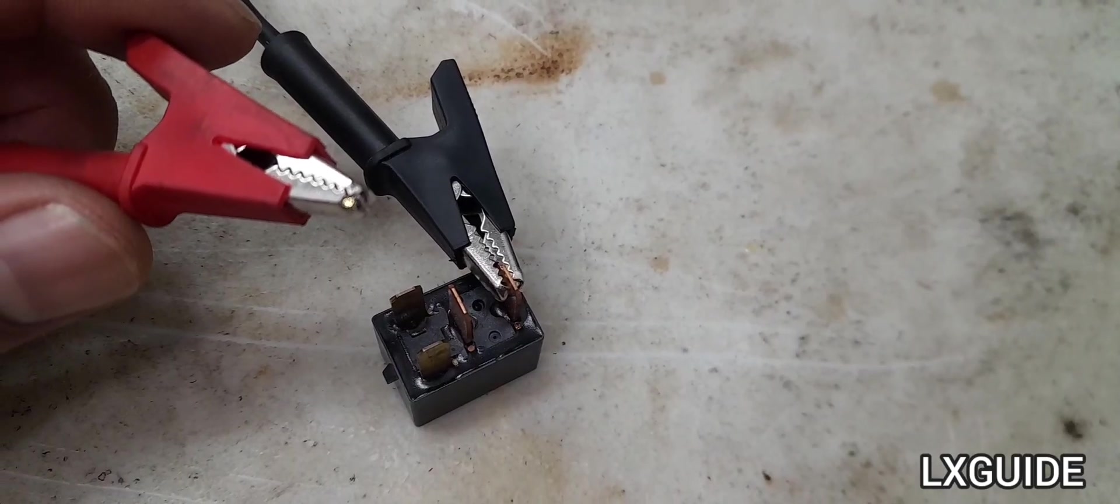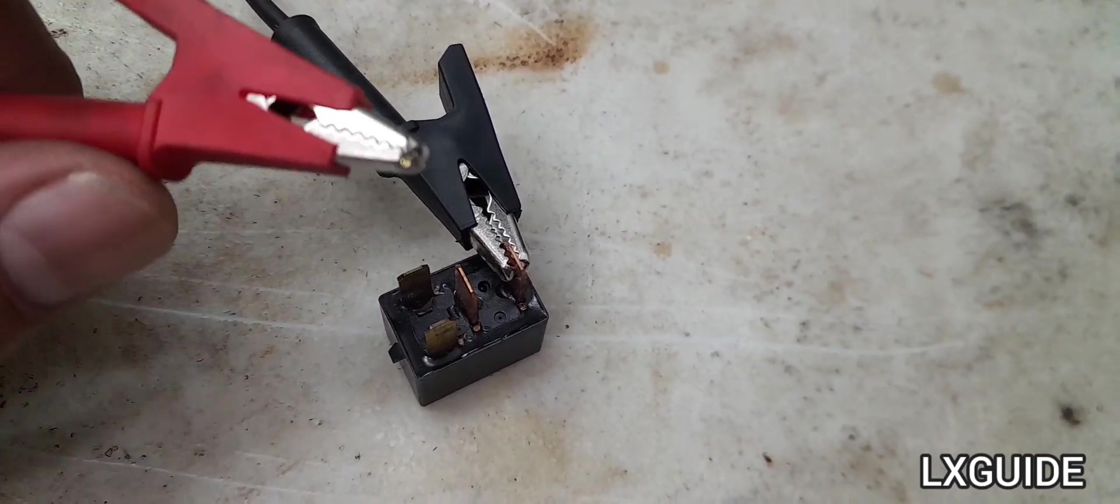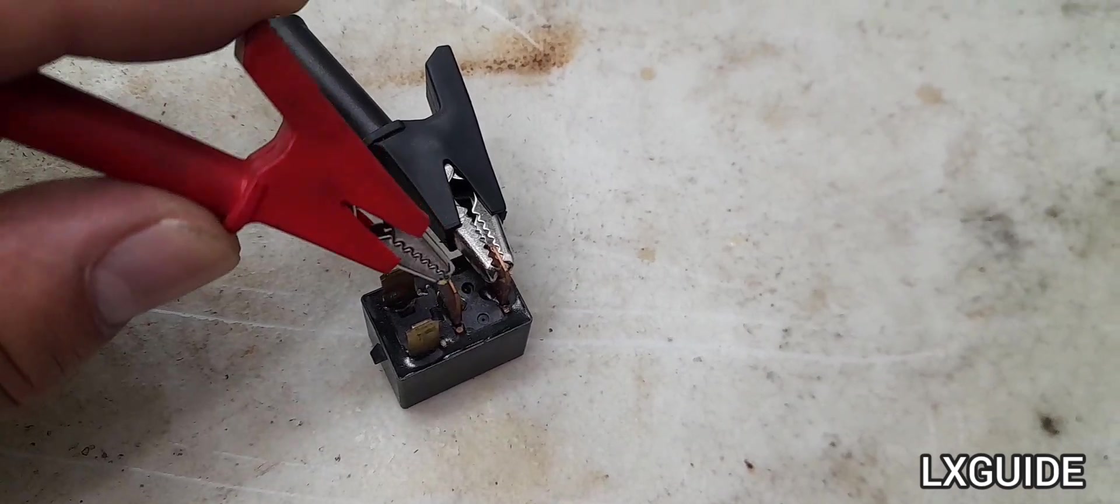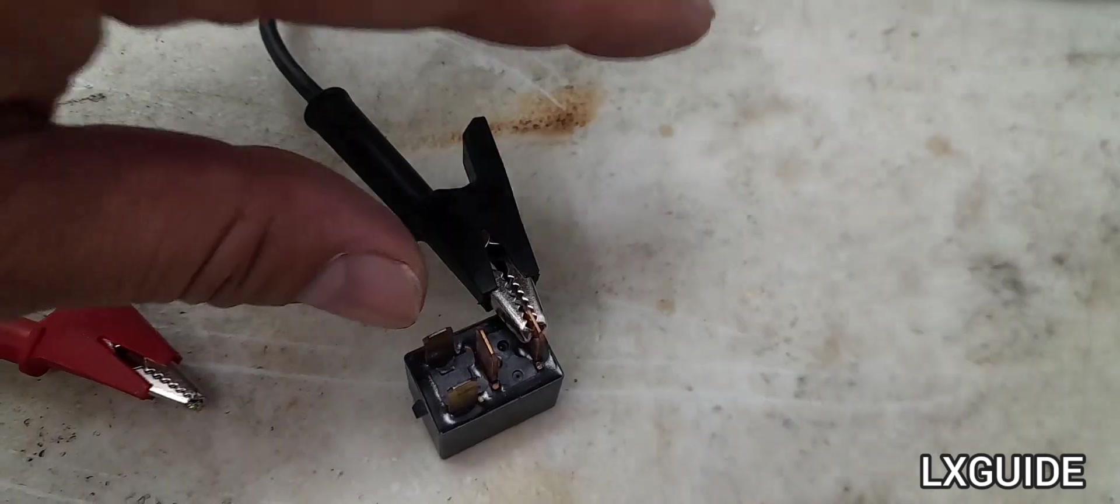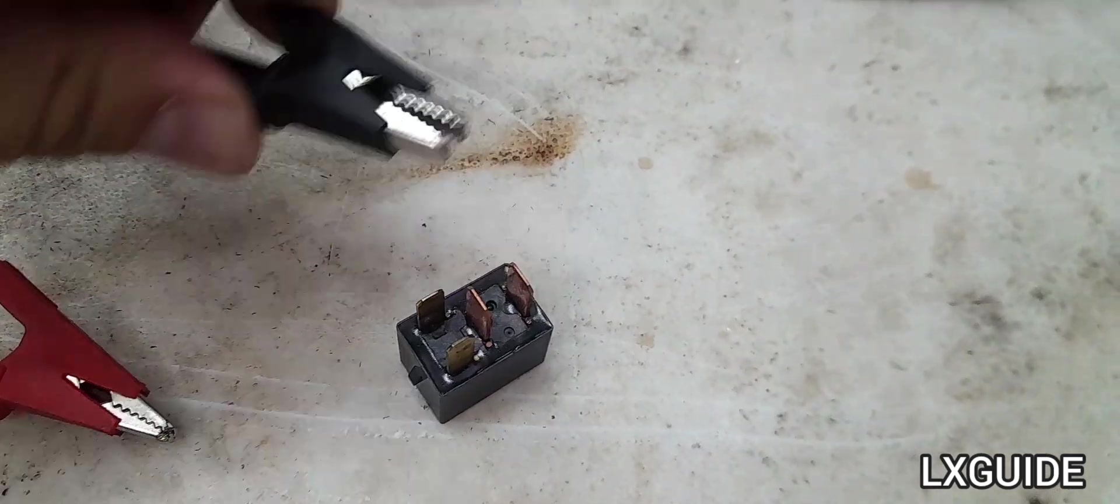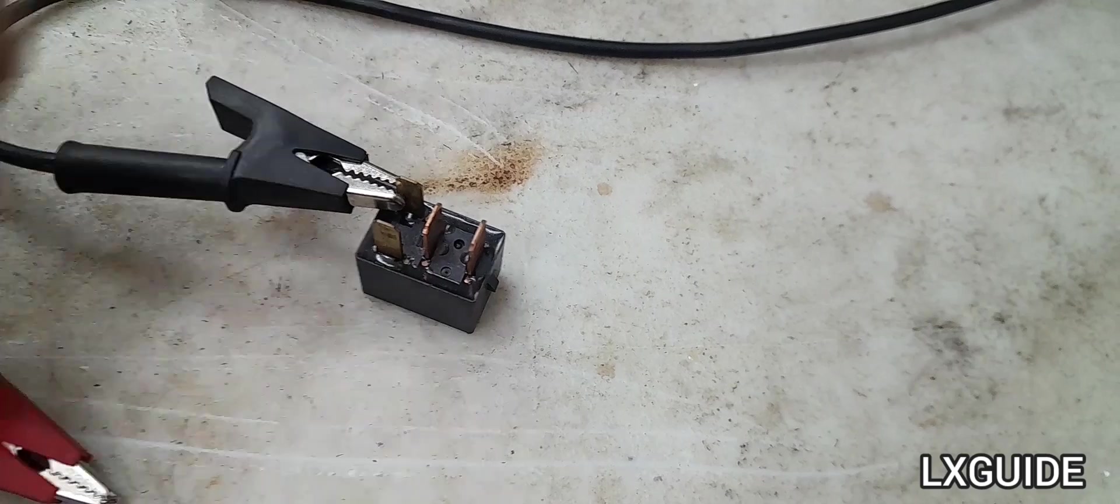To locate pin 86 and 85, just grab any pin and energize it with a 12 volt source until you hear it click. Just keep switching the jumper wires around until you hear it click.